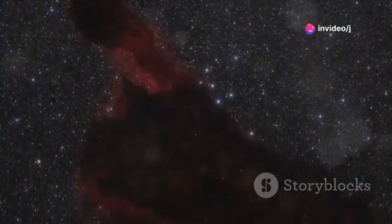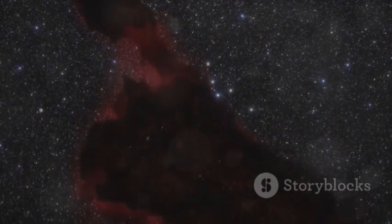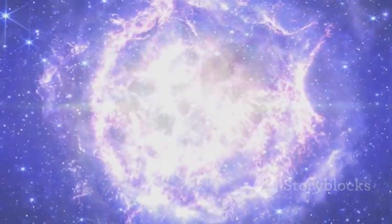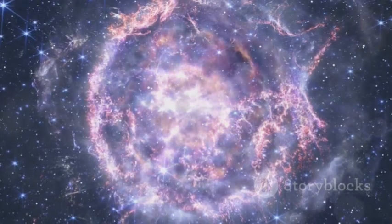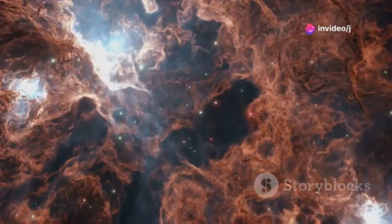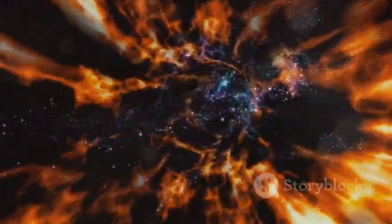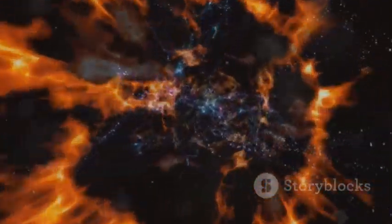Webb also studies stellar death, capturing stunning images of planetary nebulae and supernova remnants. It reveals the complex shells of dying stars, and maps the elements scattered by supernovae. The calcium in our bones, the iron in our blood, Webb shows us how these elements were forged and spread. We're seeing the cosmic recycling that made life possible.